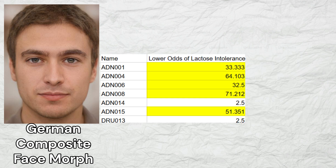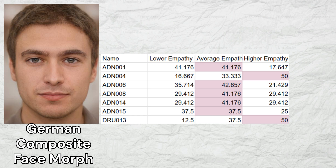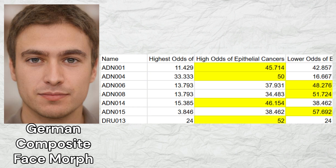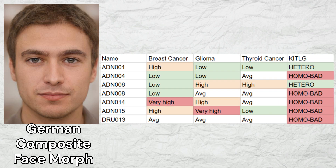Five out of seven samples were predicted to be lactase persistent. Two out of seven samples were predicted to have a higher level of empathy based on their OXDR genotypes, with the rest having an intermediate level. Regarding athleticism, their distribution of the athletic R allele in ACTN3's R577X was comparable to the European average, suggesting the early Germans were about as athletic as modern Europeans. They were predisposed to higher odds of epithelial cancers, with high predisposition to glioma and testicular cancer based on KITLG genotypes, but low predisposition to thyroid cancer and average predisposition to breast cancer.